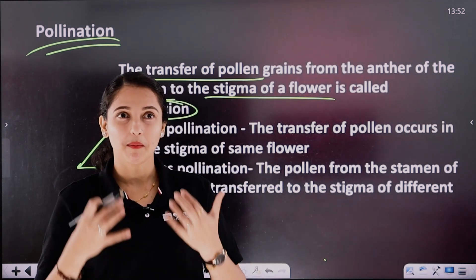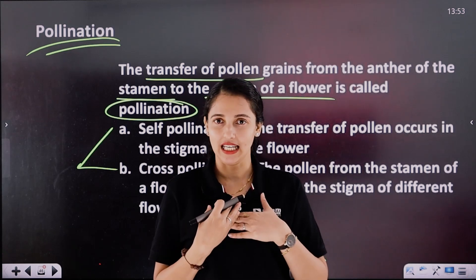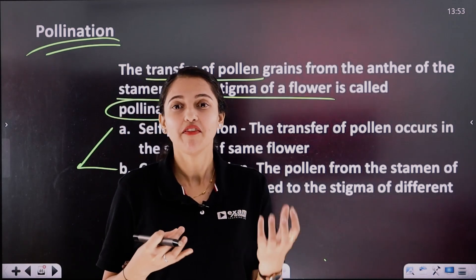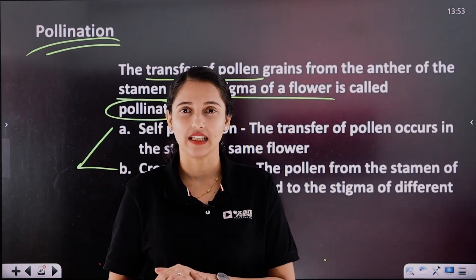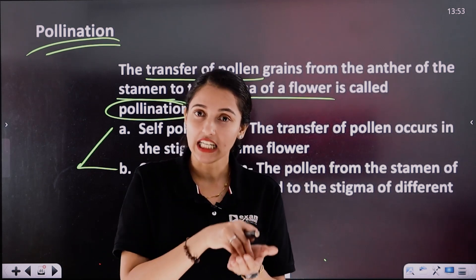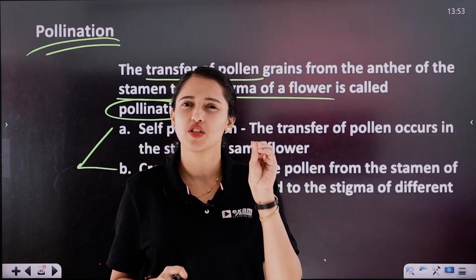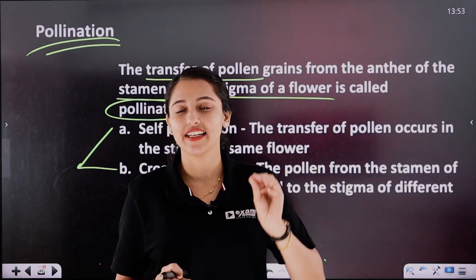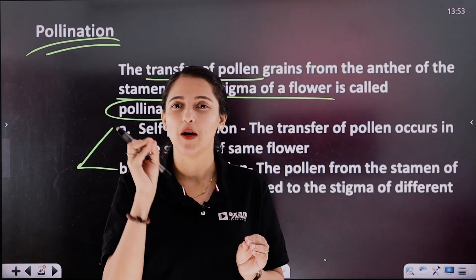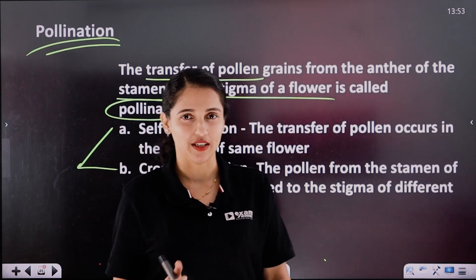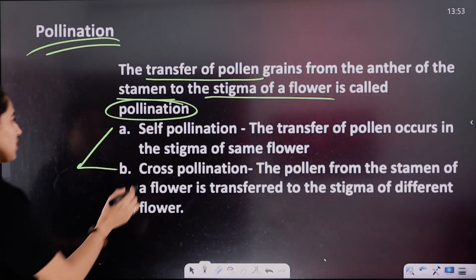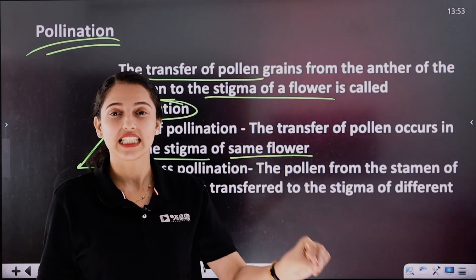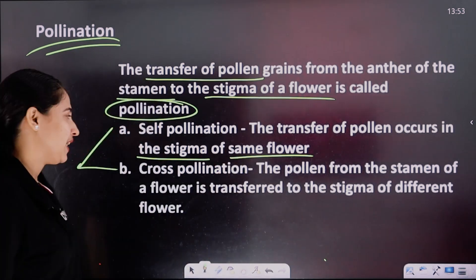Self-pollination occurs within the same flower. Bisexual flowers have both male and female reproductive structures in the same flower, and the genes are identical. That is self-pollination — the transfer of pollen grains occurs to the stigma of the same flower.